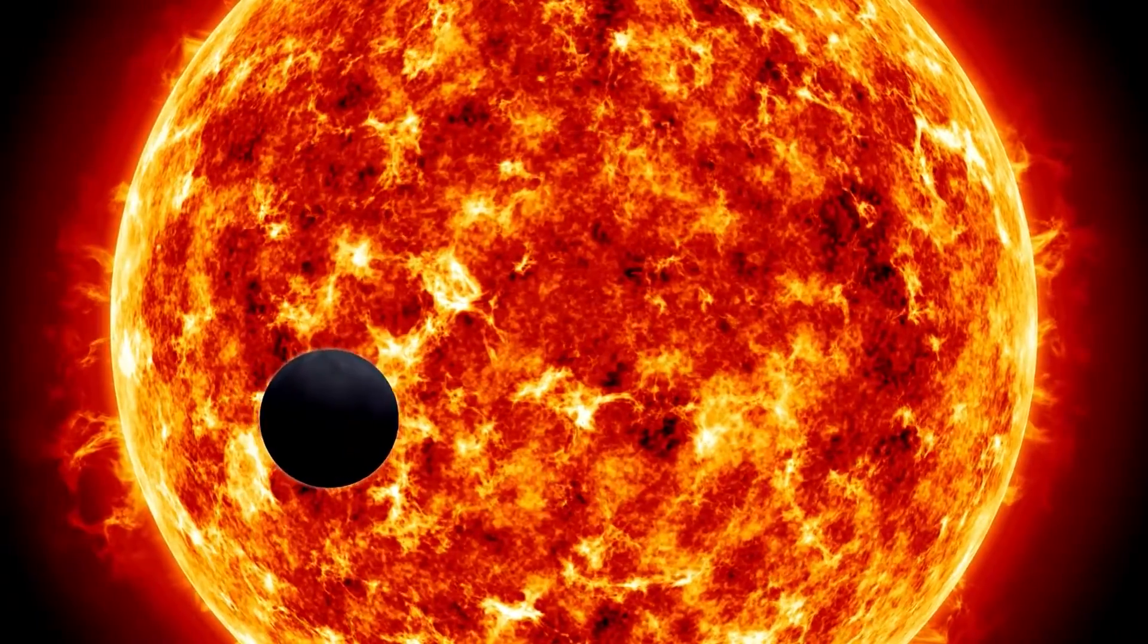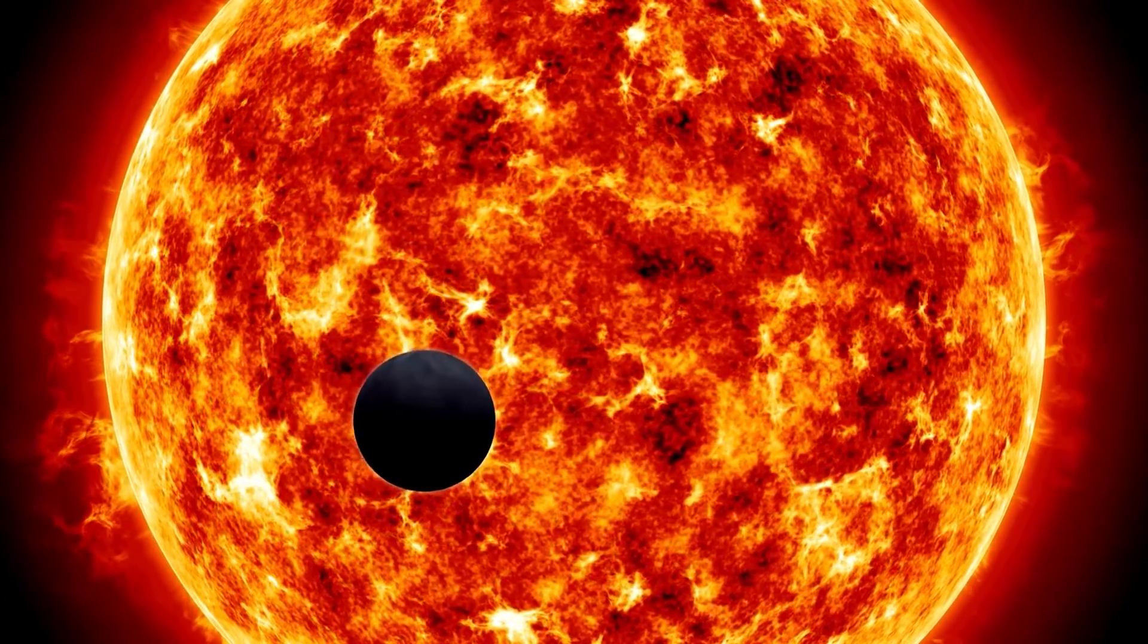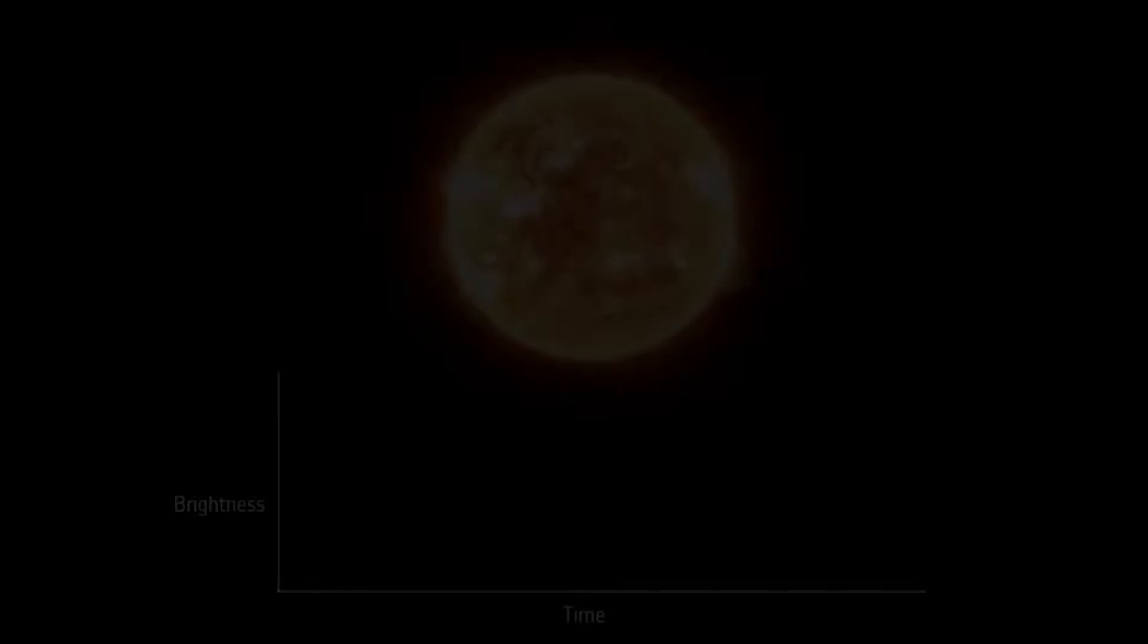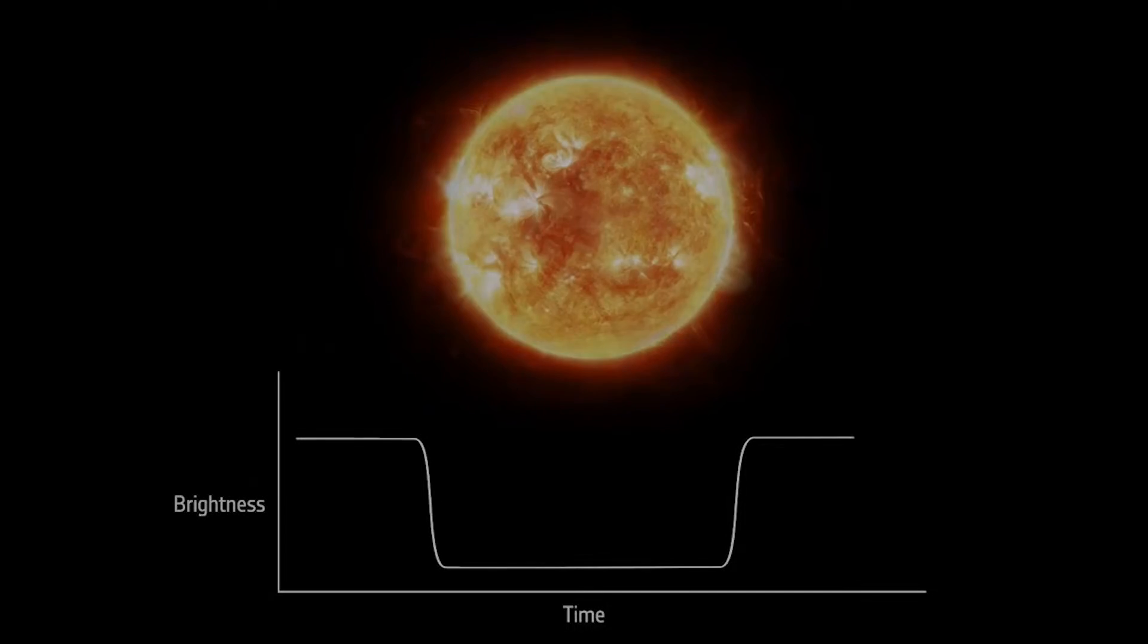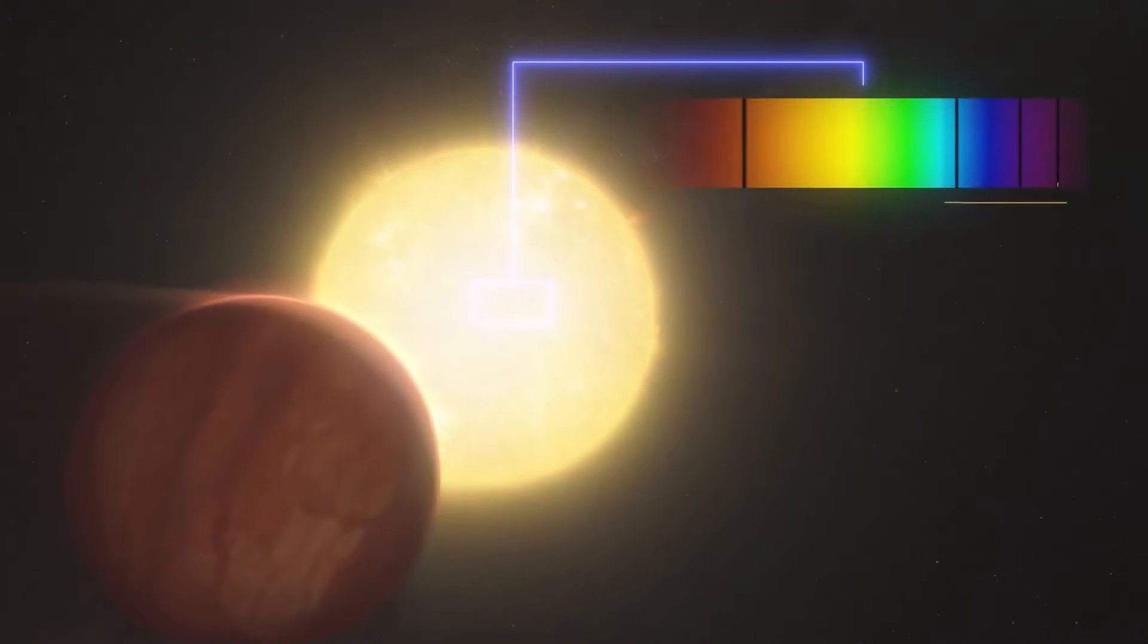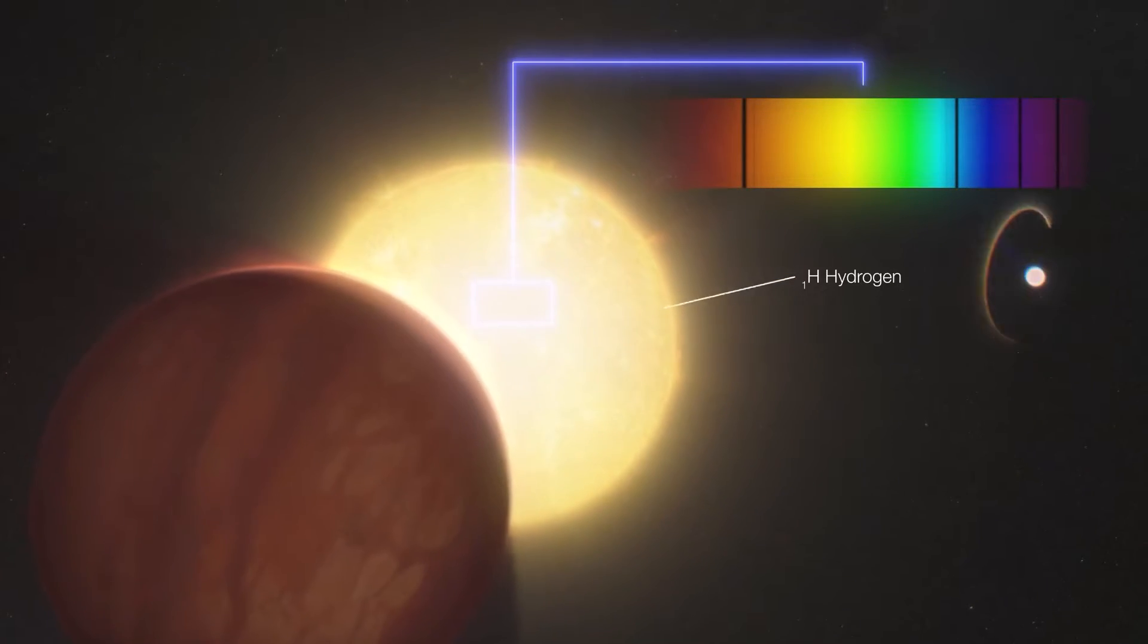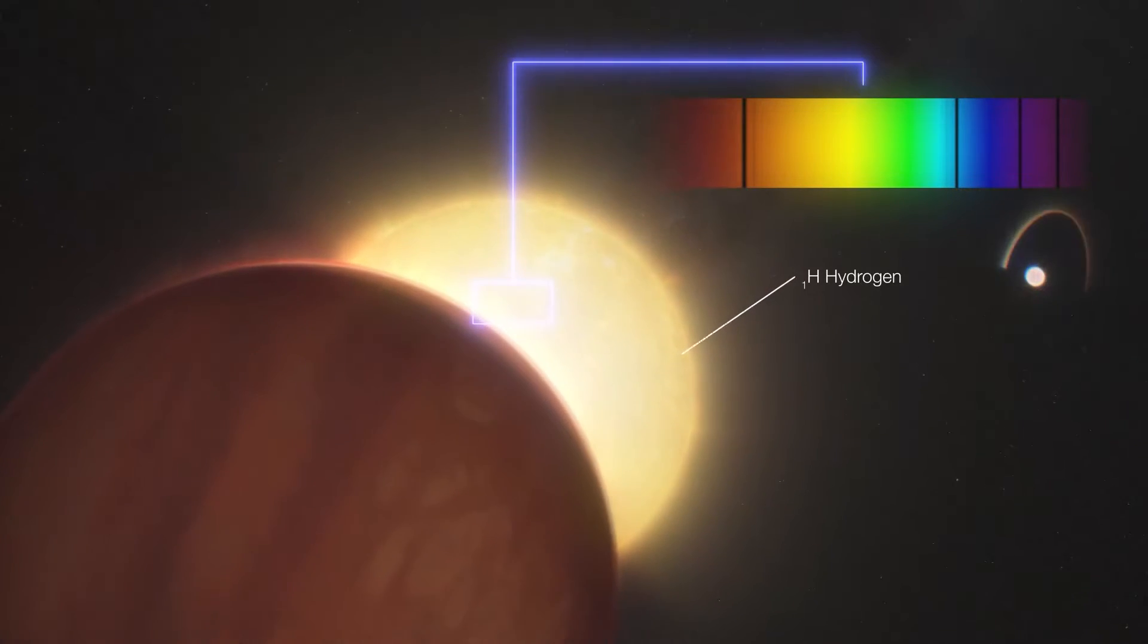One of the main exoplanet detection techniques James Webb uses is called the transit method. In this method, the telescope observes a star and looks for the small dip in brightness that occurs when an exoplanet passes in front of the star. By studying the amount of light that passes through the exoplanet's atmosphere, Webb is able to determine the composition of the exoplanet's atmosphere.